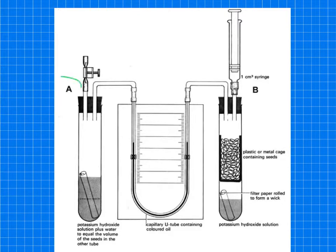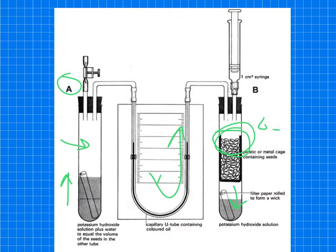Now, if we look at tube A, obviously there's no germinating seeds in it, but there is more potassium hydroxide in this tube. And that's just to equal the volume of the seeds in the other tube. So you're keeping things the same. So the only thing that could be moving the coloured oil that way is going to be pressure changes in tube B. So CO2 going into potassium hydroxide and obviously the O2 being used in aerobic respiration by the seeds. So over a specific amount of time, you can determine the rate of oxygen uptake.